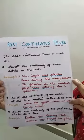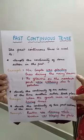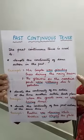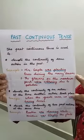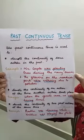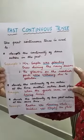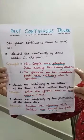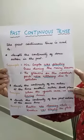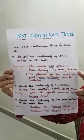This tense also denotes the continuity of an action at the time another action took place. For example, when the guests came, we were having dinner. This tense is also used to denote the continuity of two past actions at the same time. For example, Radha was dancing when Krishna was playing flute.